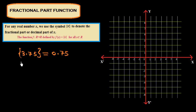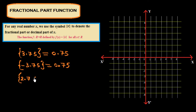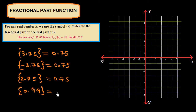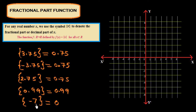The integers are ignored. If you have minus 3.75 you still get 0.75 — it is always positive, not minus 0.75. If you have 2.75 you again get 0.75. If you have 0.99 you get 0.99. If you have any integer like minus 7, you get 0, because the fractional part of an integer is 0.